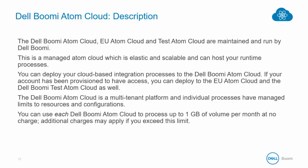Boomi maintains and runs three cloud runtimes: the Dell Boomi Atom Cloud, the EU Atom Cloud, and the Test Atom Cloud. The cloud atoms are elastic and scalable and can host your runtime processes. Boomi's clouds are multi-tenant, meaning it's a multi-customer platform with individual processes, each having their own managed limits to resources and configurations. Every time you execute a process on the cloud, your process and execution is completely separate from other processes, with its own set of resources allocated to it.